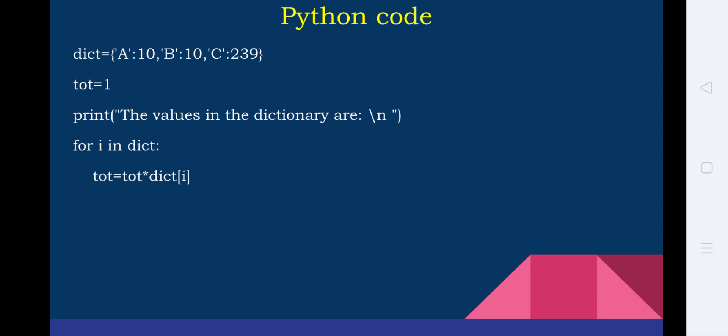1 into 10 is equal to 10. Afterwards, TOT is 10, and now next value of dict of I is B. So 10 into 10 is 100. Again the for loop goes because we have one more value. Now TOT becomes 100. Now it is TOT equal to TOT into dict of I, means now dict of I is 239 and TOT we have value is 100. So 100 into 239 is equal to 23900.